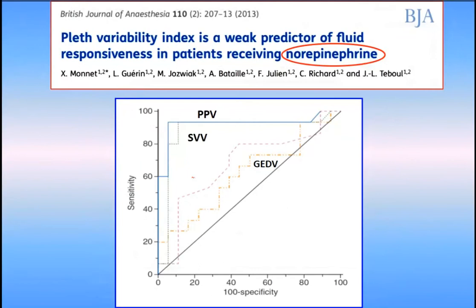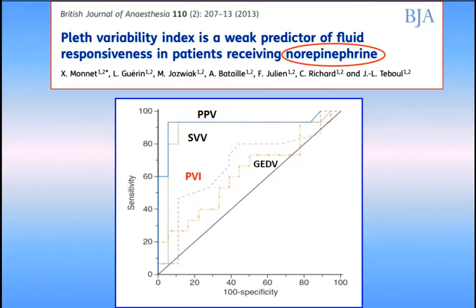We must be very careful in patients with shock receiving vasopressors, because in this situation PVI may not work very well. In a study we did in our unit comparing prediction of fluid responsiveness in septic shock patients receiving norepinephrine — using pulse pressure variation, stroke volume variation, and PVI — PVI was not as good as the other variables, possibly due to difficulties with the plethysmographic signal under norepinephrine. This is not a major problem in reality, because these patients are already equipped with an arterial catheter.